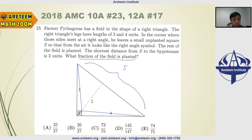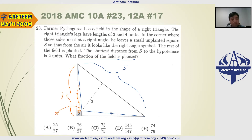Now let's look at the three smaller triangles. The first triangle has one side of length 3, and its perpendicular height is actually the side length of the small square. Let's call that side length x.